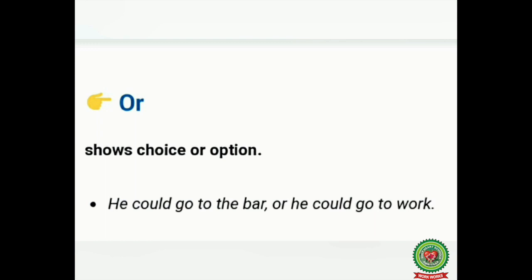The next conjunction is 'or.' 'Or' is used for choice or alternative. For example: 'He could go to the bar, or he could go to work.' There is an option to go to the bar or to go to work, so we have used the conjunction 'or' to show this option.